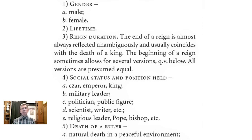During our research, we processed many historical biographies. We developed the form codes table, which consists of 34 items, some of which contain sub-items. It is a very detailed form that covers the entire biography of the subject under study. Firstly, gender — male or female — lifetime. We need to determine and include in the form code table the reign duration, social status, and position held by the subject under study.